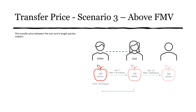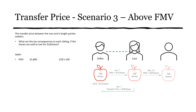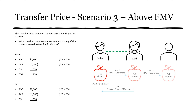The third scenario is if the transfer price is above FMV — the shares are sold to Lexi for $18 a share. Jayden's proceeds of disposition increase to $1,800 (100 shares × $18), giving a capital gain of $600 and a taxable capital gain of $300. Lexi's proceeds of disposition remain $2,000 when she sells to an unrelated party. Interestingly, her adjusted cost base is only $1,500 — because it's a non-arms length transaction, she cannot claim a higher ACB even though she paid more. Her capital gain is $500 and taxable capital gain is $250.